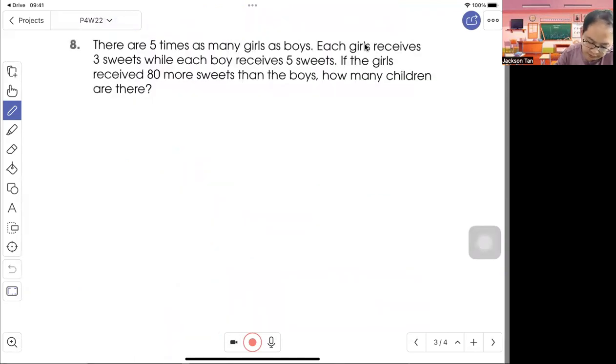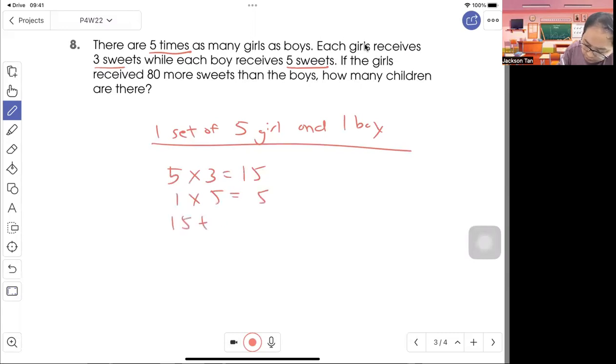Question 8. There are 5 times as many girls as boys, so let's underline. Each girl receives 3 sweets, each boy receives 5 sweets. So let's have one set of 5 girls and 1 boy first. So 5 times 3 is 15, 1 times 5 is 5, 1 set will have total 20. So okay this one we can skip.